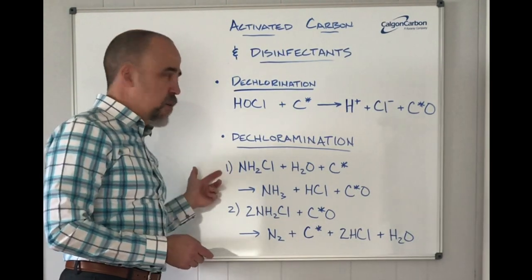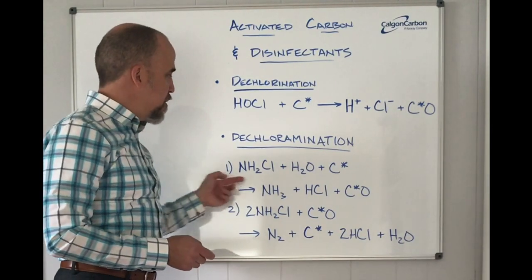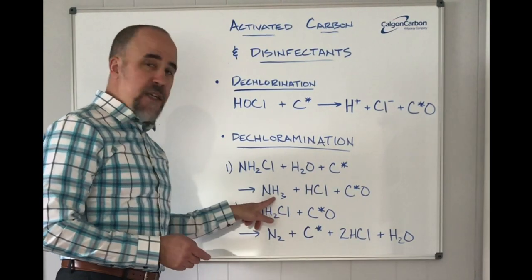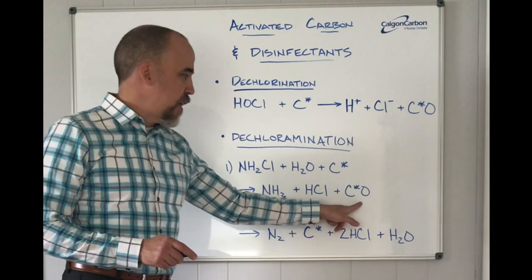Dechloramination, while it looks quite a bit more complicated, is really a similar process. Here in this case shown is the monochloramine reacting with the carbon surface producing initially, during a ripening phase, a small amount of ammonia and a surface oxide.